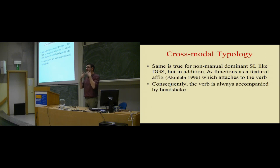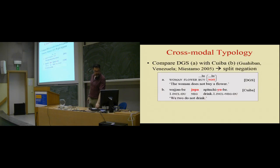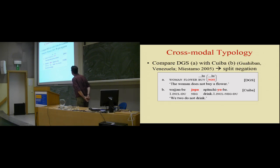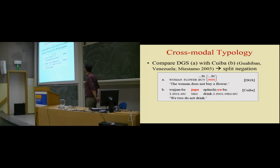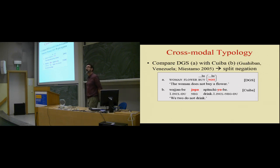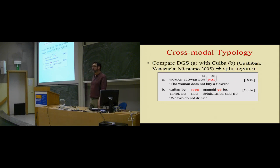Now, what about sign languages? In the last few minutes I want to speculate a little. With sign languages, we don't have the historical data to make strong claims about diachrony — for French and English you have old written texts, but sign languages were not recorded in a similar way until the early 20th century. So what I propose is speculation. It might be that the different systems — manual dominant and non-manual dominant — represent different stages on this cycle.